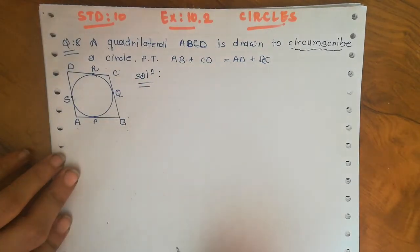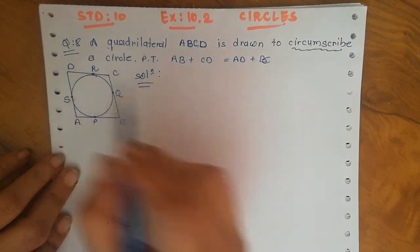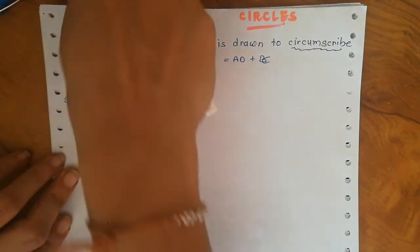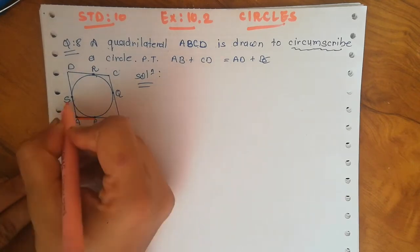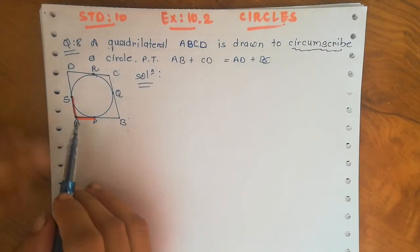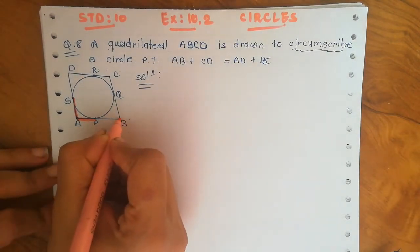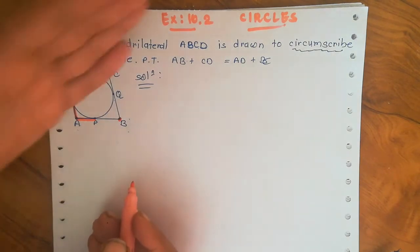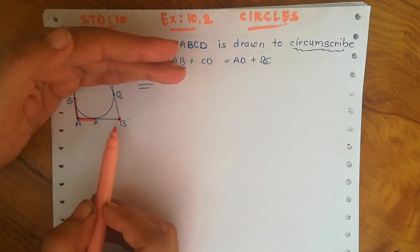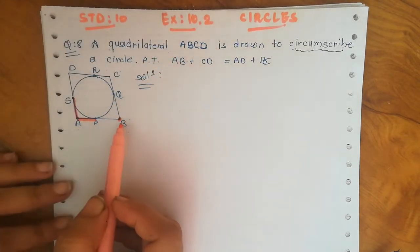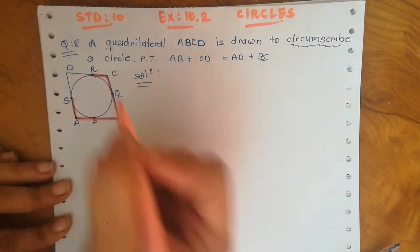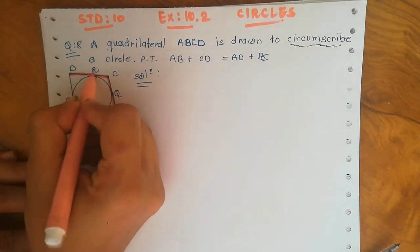So we have the quadrilateral circumscribing a circle with four points of contact P, Q, R, and S. From the point B, the tangents drawn to the circle are BQ and BP. From point C, the tangents are CR and CQ. From point D, the tangents are DR and DS.